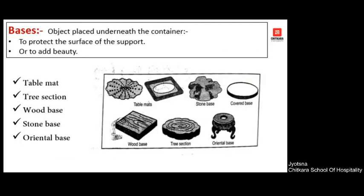The next equipment is base. Base is any object that you keep or use just underneath your container. It provides support and also provides beauty. Moreover, it also protects the surface on which the flower arrangement has been kept. Various options are there — you can use a table mat, any tree section, stone base, oriental base, or a wooden piece can be used as a base for the container.